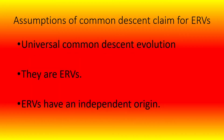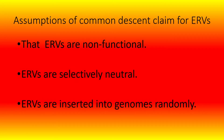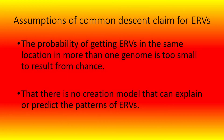The first assumption is universal common descent evolution. The second is that they are ERVs. Third is that ERVs have an independent origin. Fourth, that ERVs are non-functional. Fifth, ERVs are selectively neutral. Sixth, ERVs are inserted into genomes randomly. Seventh, the probability of getting ERVs in the same location in more than one genome is too small to result from chance. And eighth, that there is no creation model that can explain or predict the pattern of ERVs.